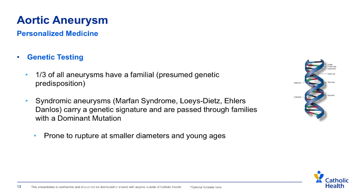We've launched a program to do genetic testing because we know that a third of these aneurysms have a familial cause. We know within the medical community that several syndromic conditions — such as Marfan syndrome, Loeys-Dietz, and EDS — carry a unique genetic signature and are passed through families in a dominant mutation, meaning they go from generation to generation. Patients with these syndromic conditions are prone to rupture or tear at smaller diameters and younger ages, helping us personalize the timing of surgery.